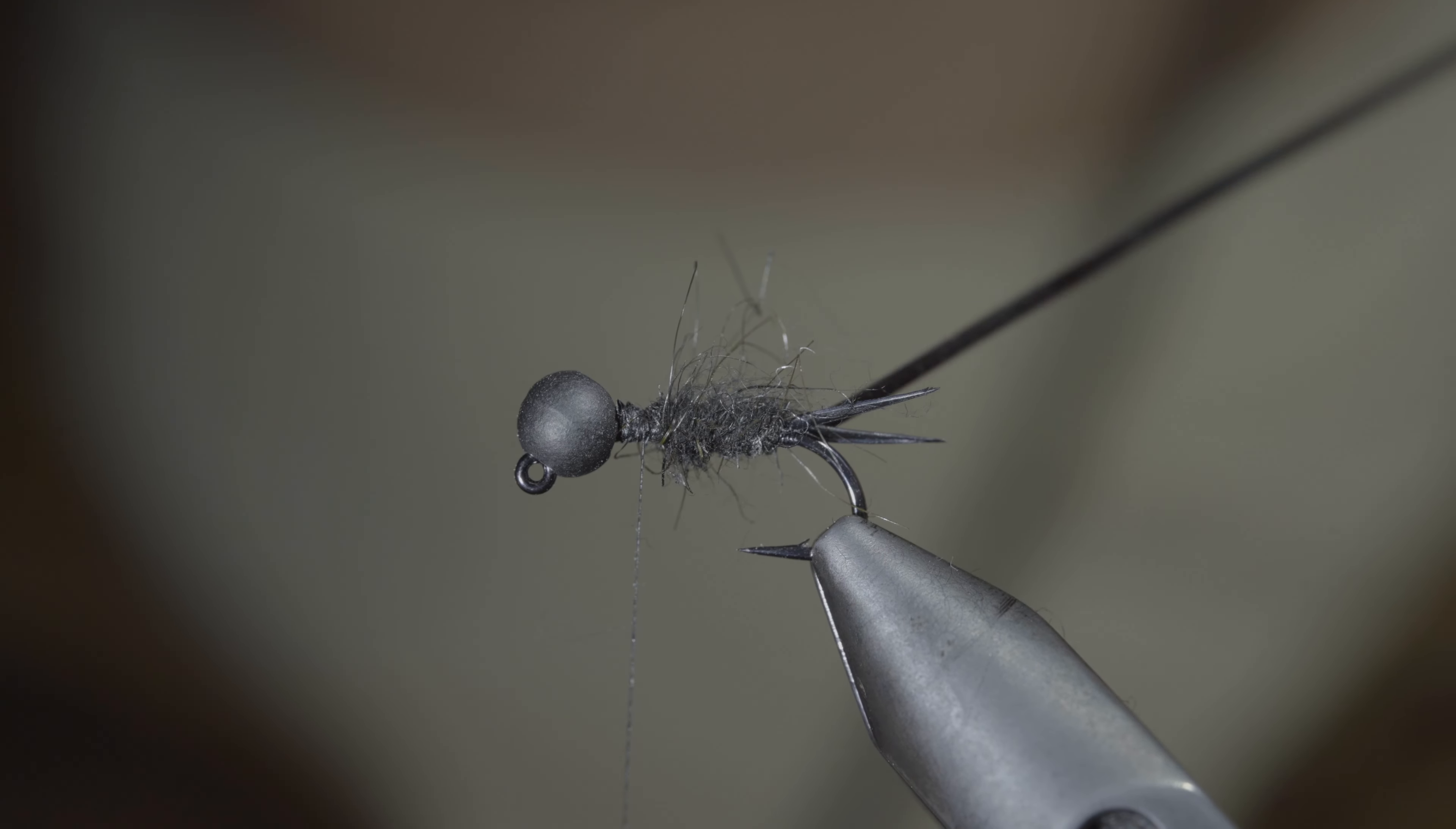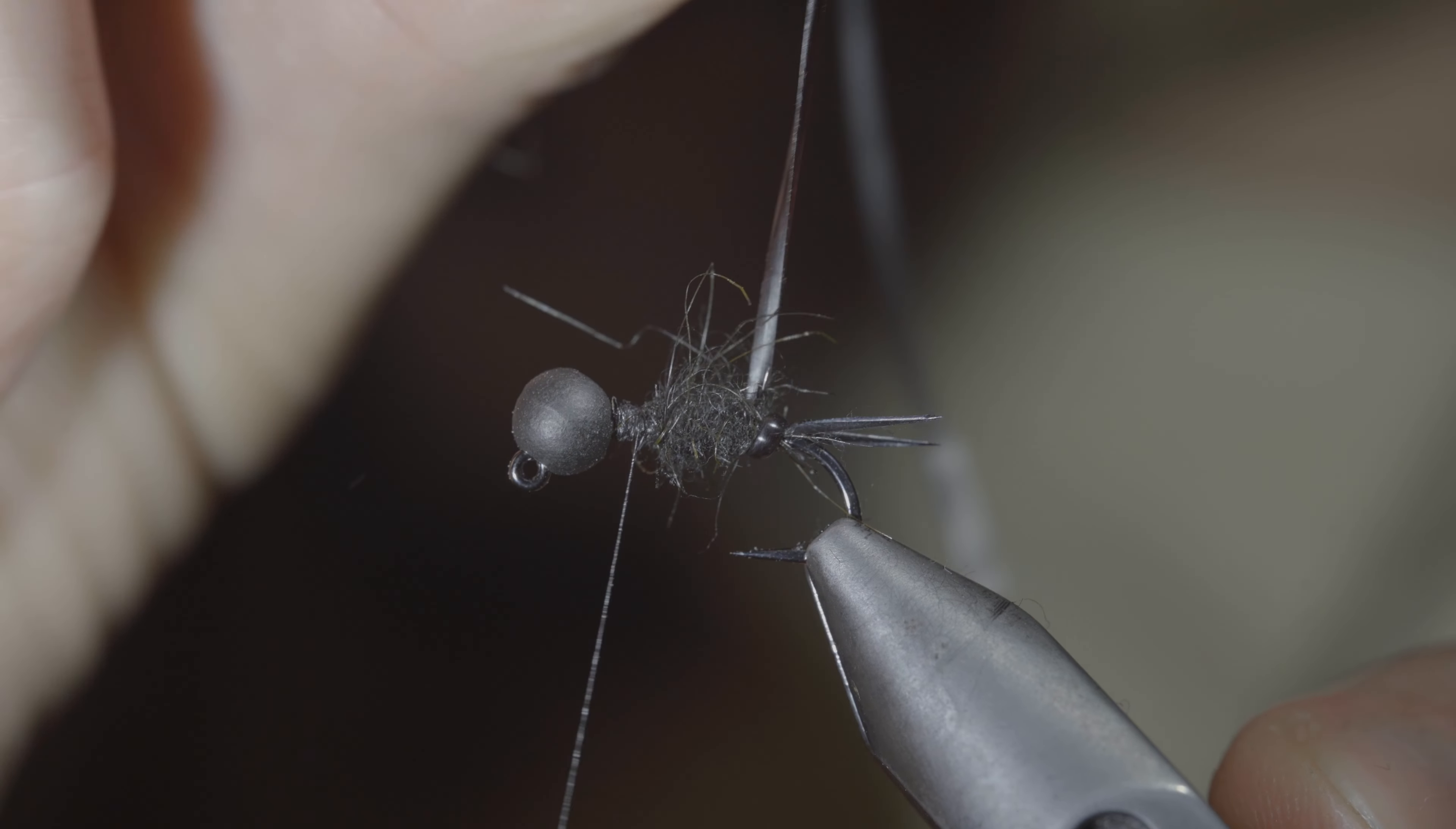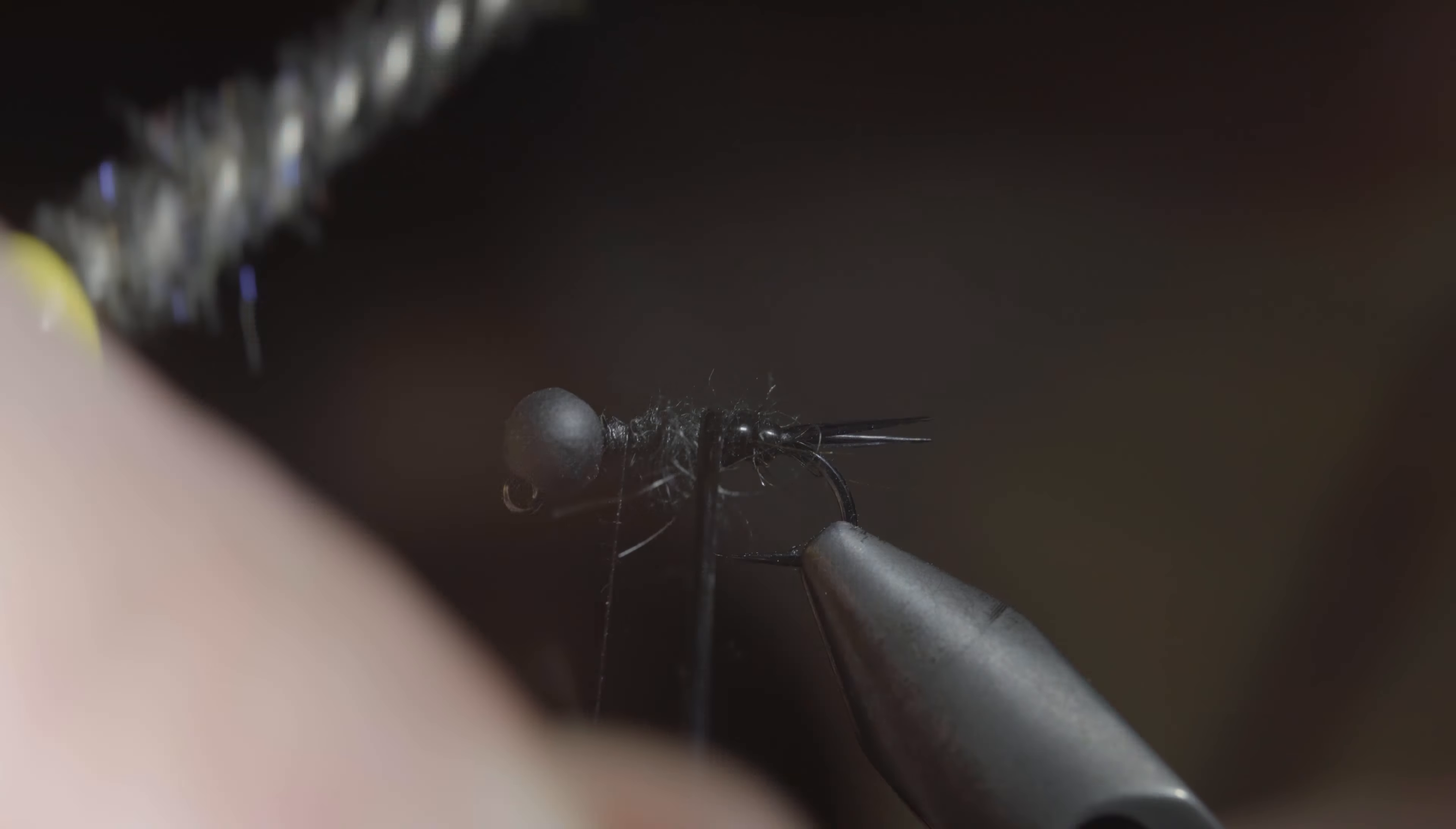With this complete, we'll brush it out to give it a nice buggy look before grabbing our vinyl wire and wrapping it in close touching spirals, allowing some of our hare's ear to show through to help give it some character.